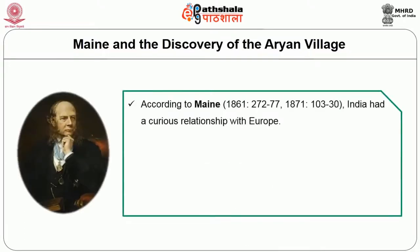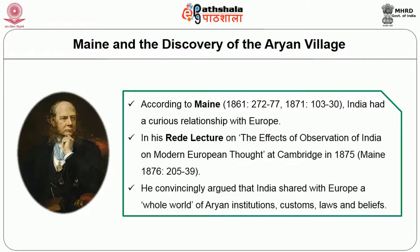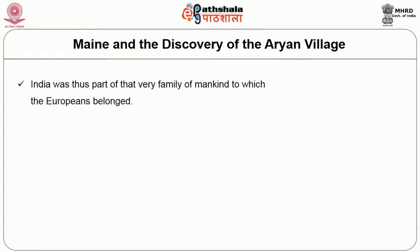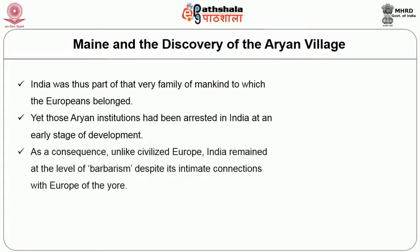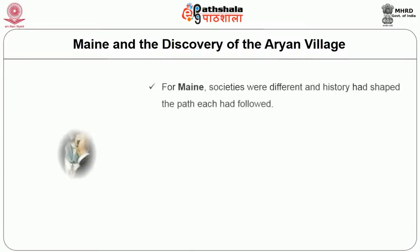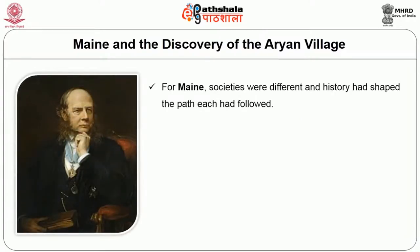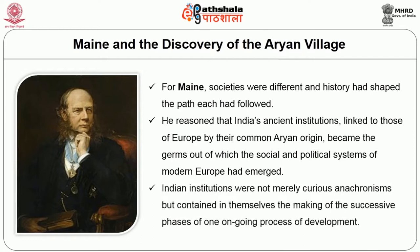According to Maine, India had a curious relationship with Europe. In his 1875 Cambridge lecture on the Effects of Observation of India on Modern European Thought, he argued that India shared with Europe a whole world of Aryan institutions, customs, laws, and beliefs. India was thus part of the same family of mankind to which Europeans belong. Yet those Aryan institutions had been arrested in India at an early stage of development; unlike civilised Europe, India remained at the level of barbarism. India and Europe were fundamentally implicated with each other through common origin yet paradoxically different.